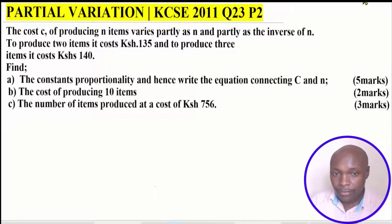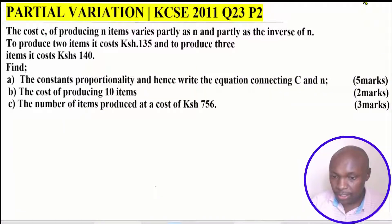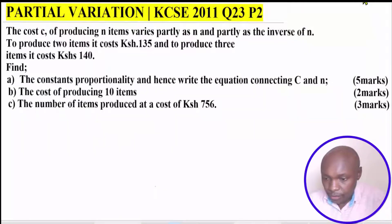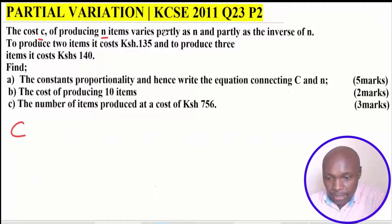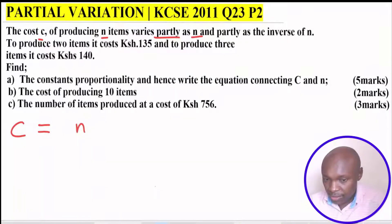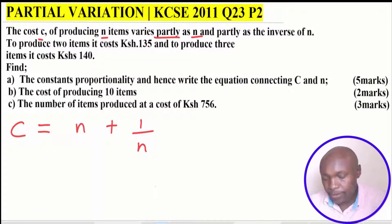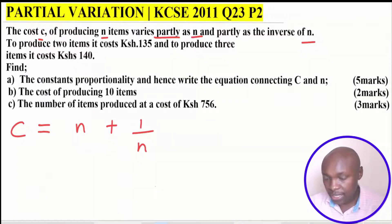We're going to read the first statement again so that we can write the equation connecting these variables. This is partial variation, and to solve this question you require some prior knowledge on how to write an equation connecting various variables in partial variation. The cost C of producing N items varies partly as N and partly as the inverse of N, which we write as 1 over N. We must insert constants of proportionality in that equation.